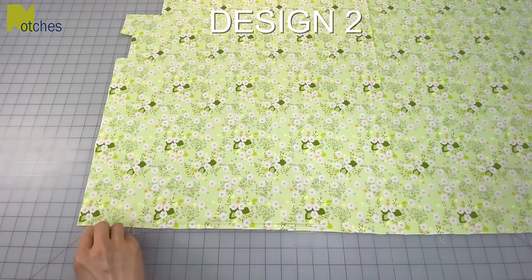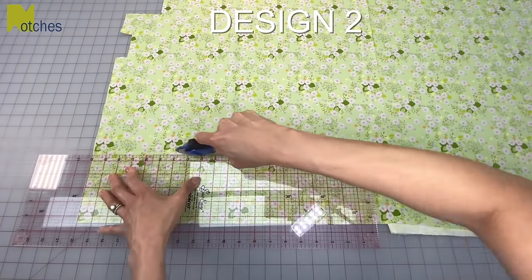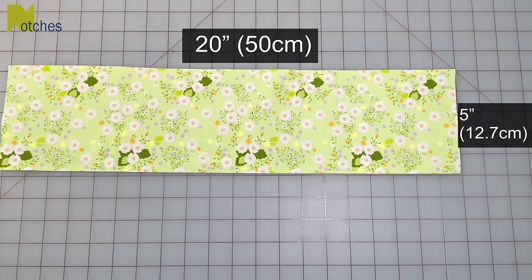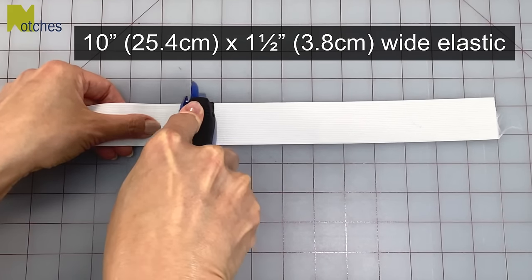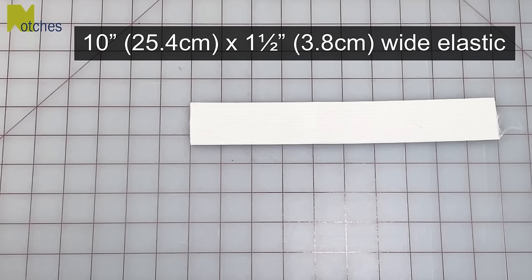For design 2, cut a fabric piece out 5 inches by 20 inches. You'll also need 10 inches of 1.5 inch wide elastic. You can also use cotton tape or fabric cut to this size.